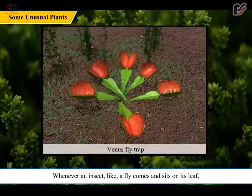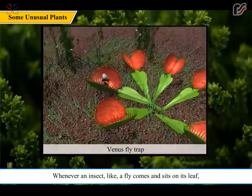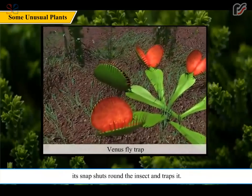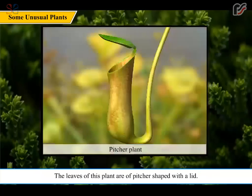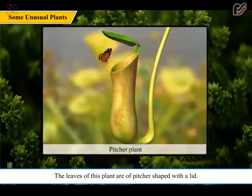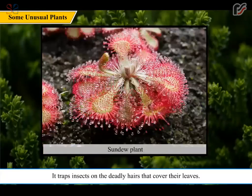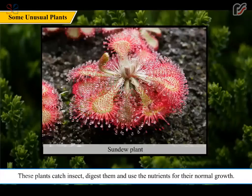Venus flytrap: whenever an insect like a fly comes and sits on its leaf, it snaps shut around the insect and traps it. Pitcher plant: the leaves of this plant are pitcher-shaped with a lid; when an insect sits on the mouth of the pitcher-shaped leaf, its lid shuts and the insect gets trapped inside. Sundew plant: it traps insects on the sticky hairs that cover its leaves; the sticky drops at the end of the hair kill the insect.